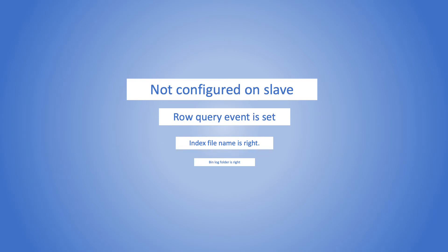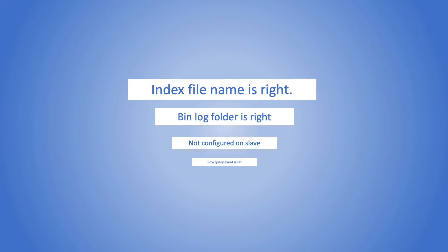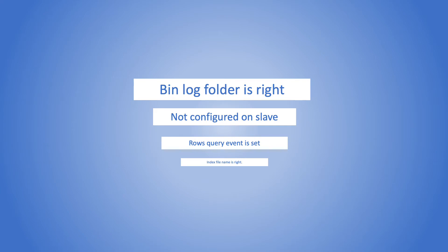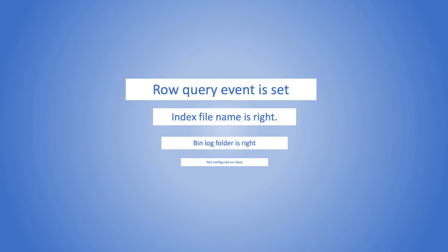Let's look at a few more simple but critical settings that can cause trouble if not set appropriately. Make sure the CDC engine is not configured on standby. Ensure the index file exists, is correct, and has read permission for CDC users. Verify that CDC has been configured with the right bin log directory. Lastly, the rows_query_log_events parameter, when set, generates lots of informative events. This can increase the size of the log file and can generate unknown events for CDC. Feel free to unset it if it is turned on without a purpose.